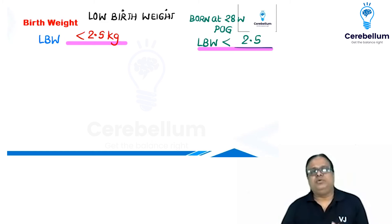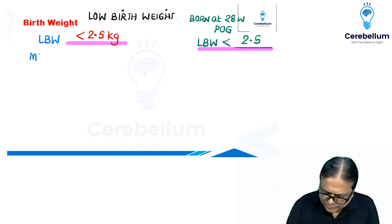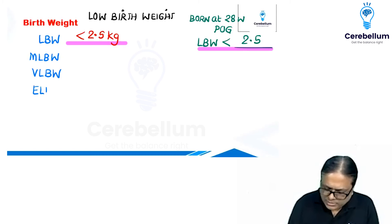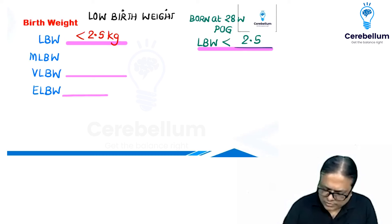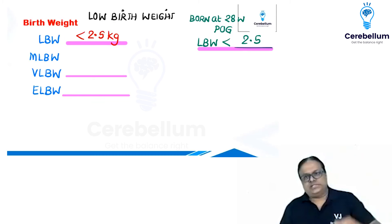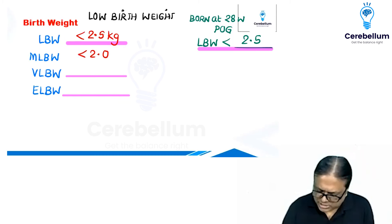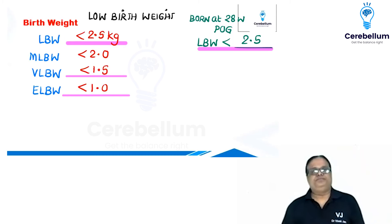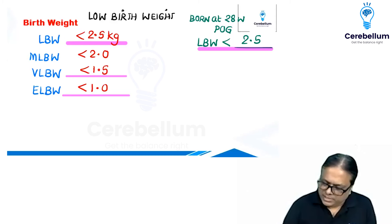The WHO classification of low birth weight has been asked in the FMG exam. Moderately low birth weight is less than 2 kg — this has not been asked. Very low birth weight, which has been asked, is less than 1.5 kg. Extremely low birth weight, also asked, is less than 1 kg.